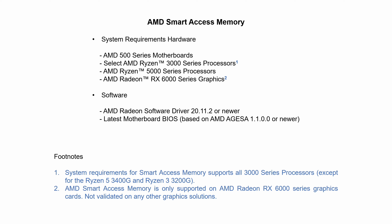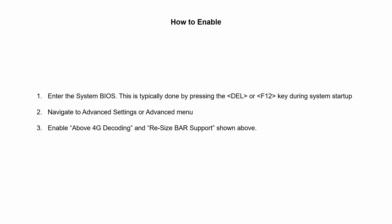So, is RX 6000 or better? How to enable: the first step is to enter the system BIOS. This is typically done by pressing the Del or F12 key during system startup. Navigate to advanced settings or advanced menu, and next enable Above 4G Decoding and Resizable BAR support, as shown above.